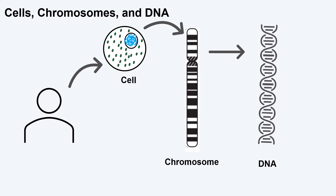Each one of us has more than a trillion cells that make up our bodies. Our cells contain our genetic material called DNA. DNA acts as our body's instruction manual. Most of our genetic material is tightly wound up into structures called chromosomes and stored in a part of the cell called the nucleus. This genetic material is called our nuclear DNA.